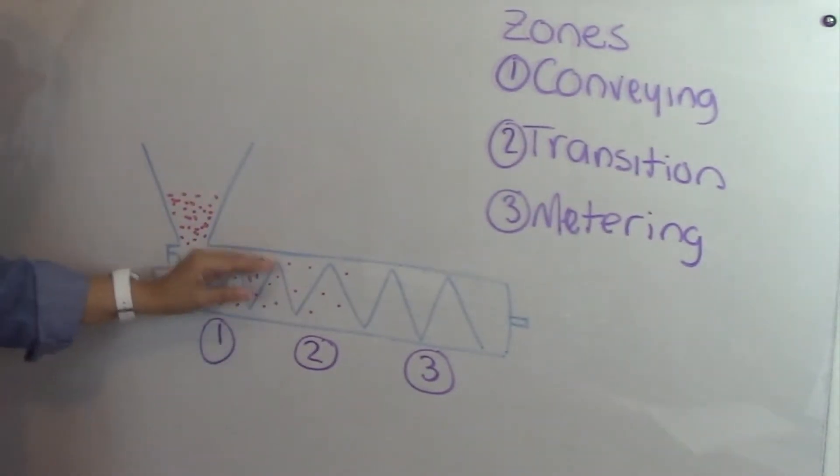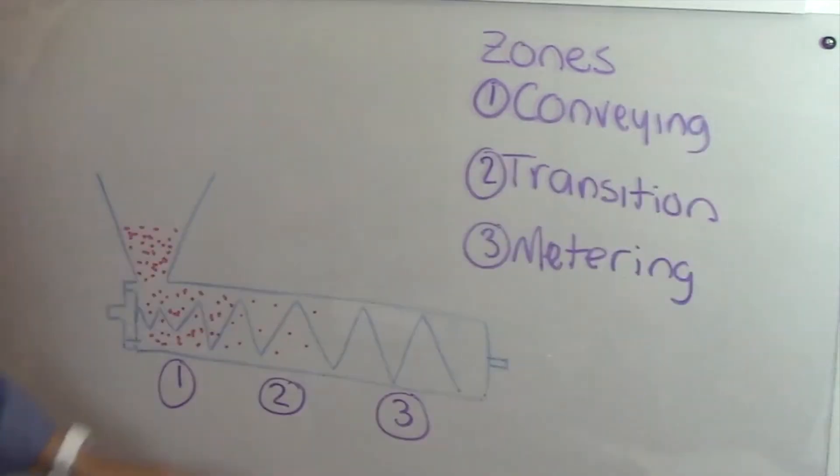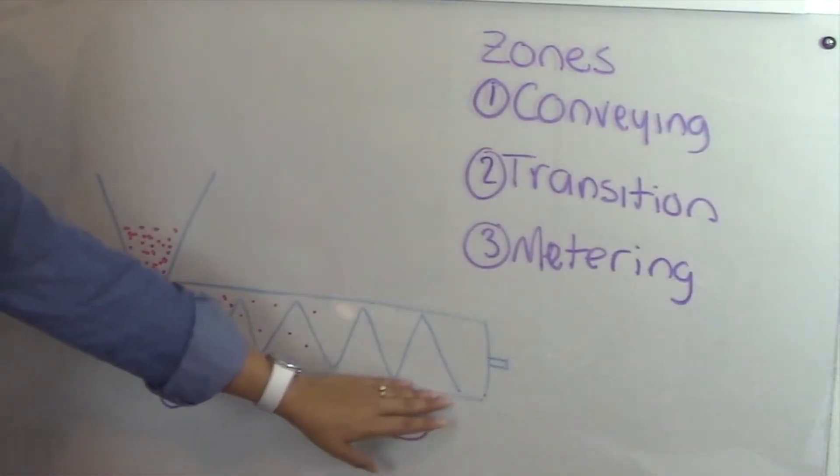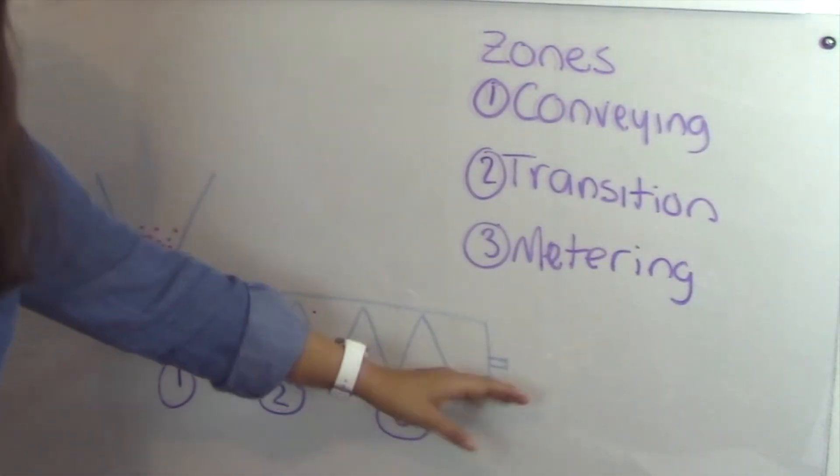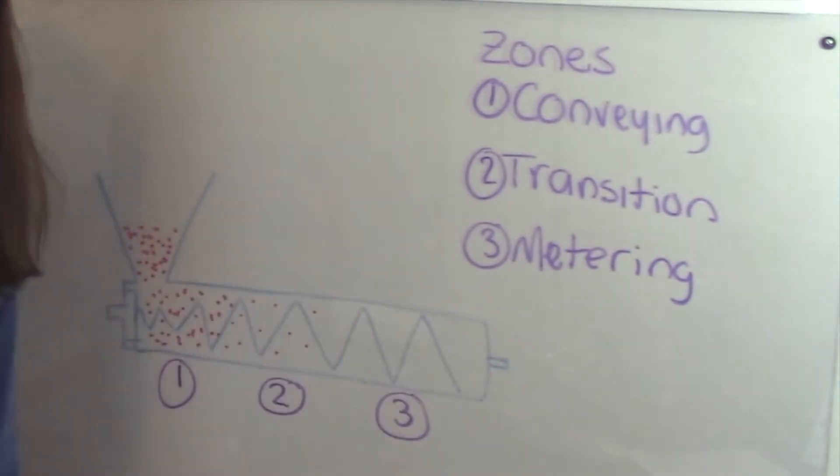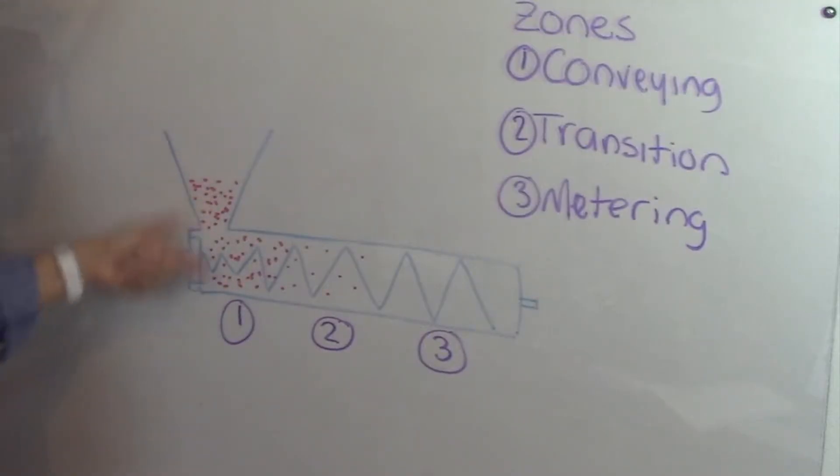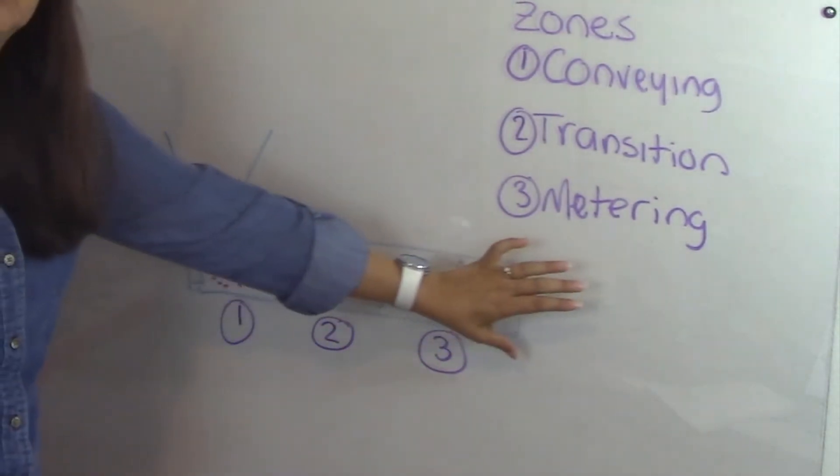In Zone 2, the pellets start to melt, and in Zone 3 you have all the pellets molten and then they come out through whatever shape you have in this die. So the screw is continuously rotating, heated, and pumping the pellets out.